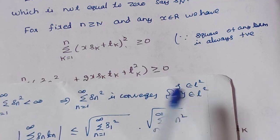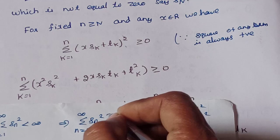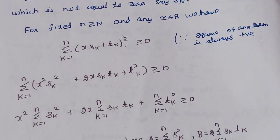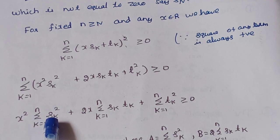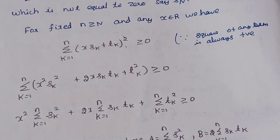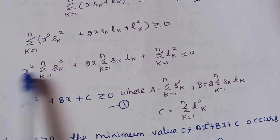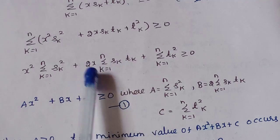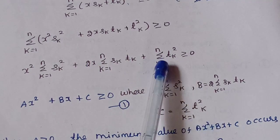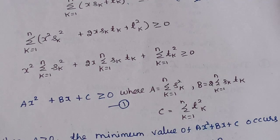Since both sequences are in L2, the series summation Sn squared and summation Tn squared converge to real numbers. Let A = summation k=1 to n of Sk squared, B = 2 times summation k=1 to n of SkTk, and C = summation k=1 to n of Tk squared. This gives us Ax² + Bx + C ≥ 0, which is a quadratic inequality.